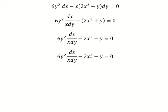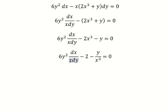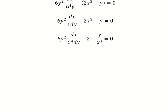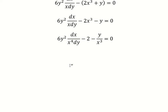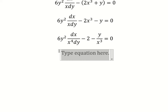Next we divide both sides by s to the power of three. We can see that we have negative one over s to the power of three, and s over s to the power of four dy. This is about Bernoulli's equation.